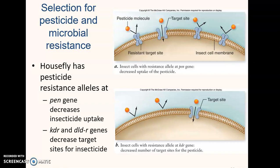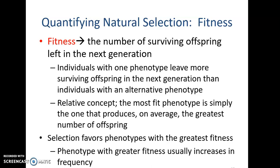How do we quantify natural selection? We can use a concept called fitness, which equals the number of surviving offspring left in the next generation. Individuals with one phenotype are going to leave more surviving offspring than individuals with an alternate phenotype. If a phenotype is selected for, there will be more offspring bearing that phenotype. This is a relative concept — the most fit phenotype is the one that produces more offspring, on average, than the other phenotypes. Selection favors the phenotypes with the greatest fitness.